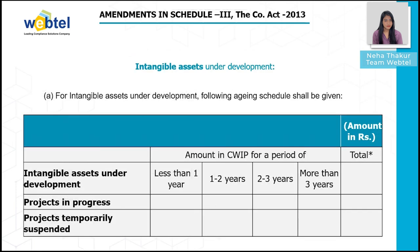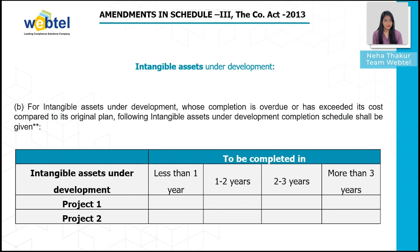The next amendment covers intangible assets under development. For intangible assets under development, an aging schedule shall be given, and the total shall tally with the intangible assets under development amount in the balance sheet. Similarly, for intangible assets under development whose completion is overdue or has exceeded its cost compared to the original plan, a completion schedule shall be provided, and details of projects where activity has been suspended shall be given separately.